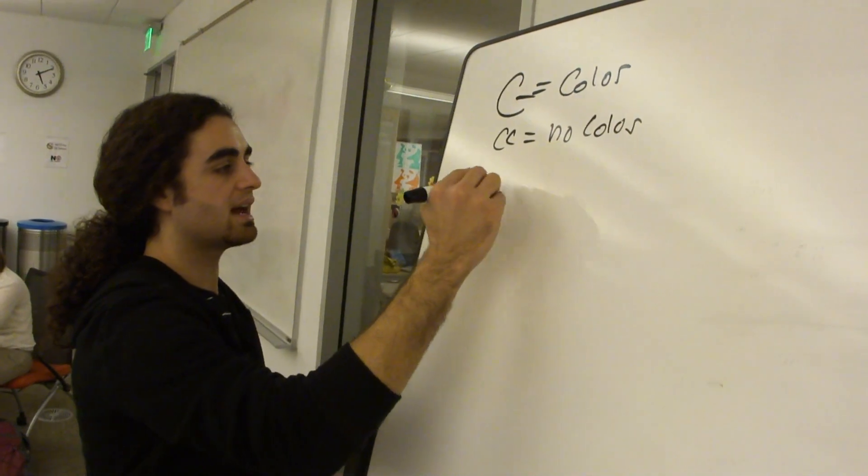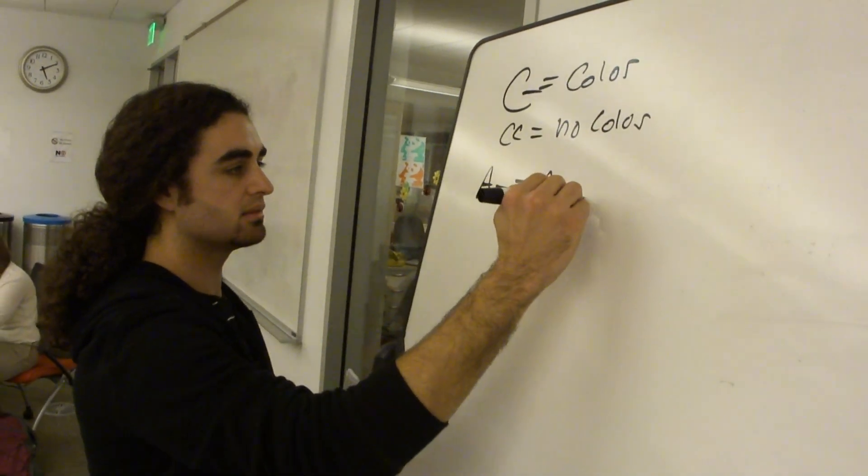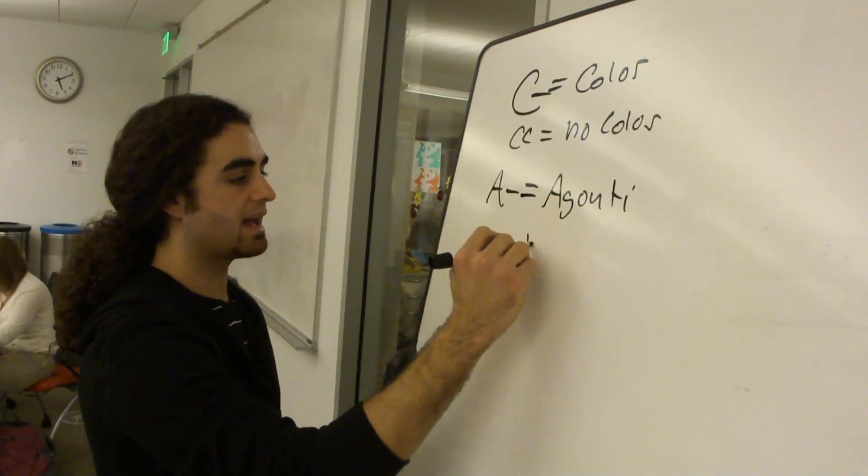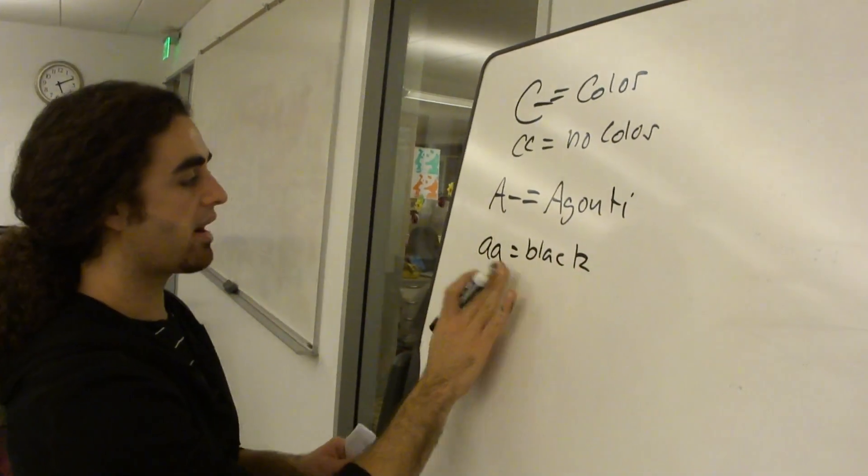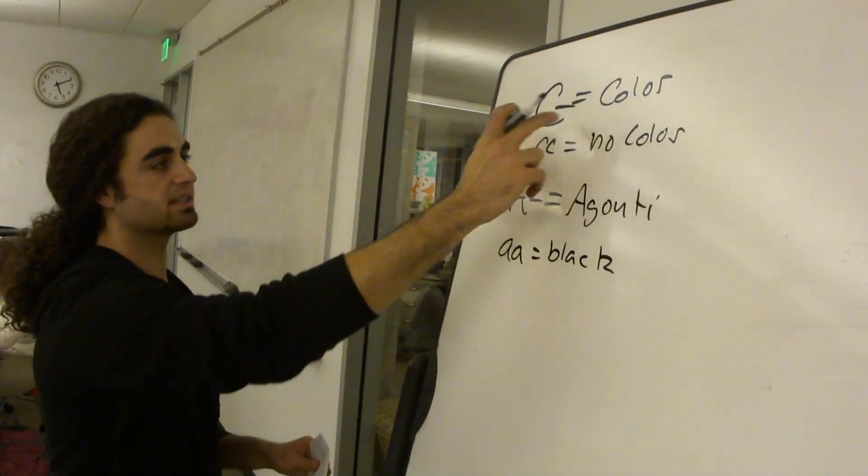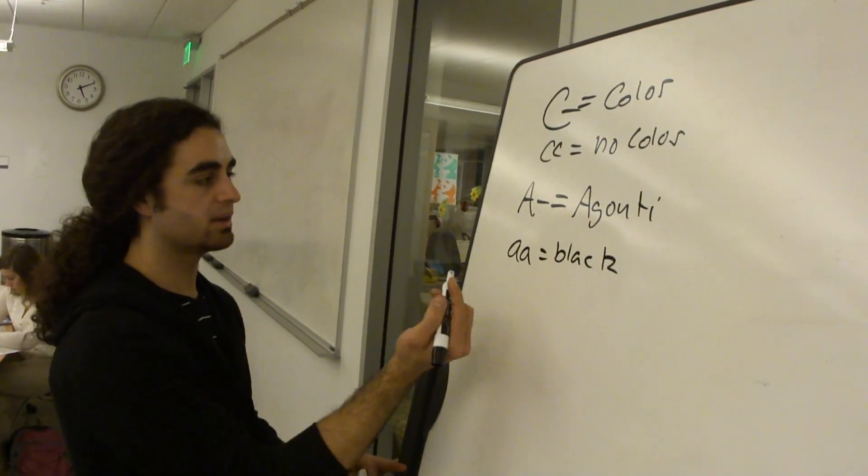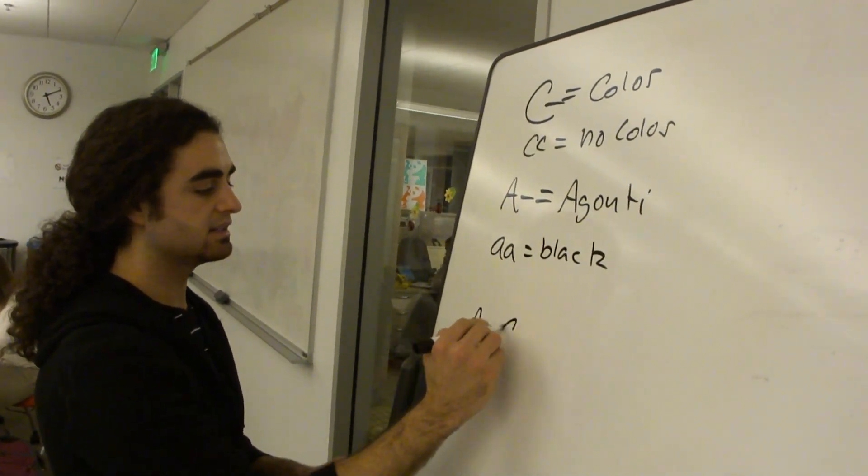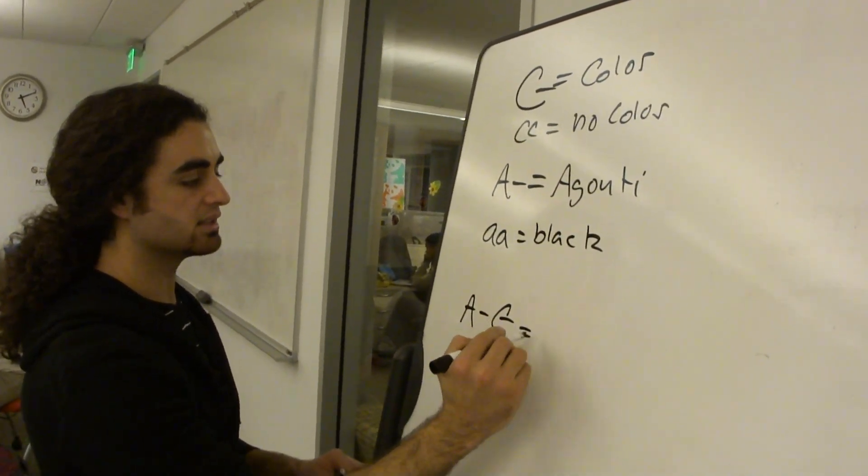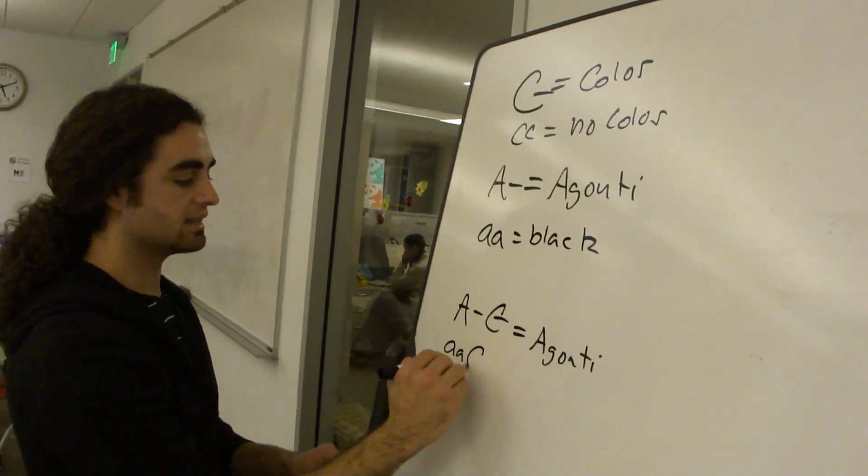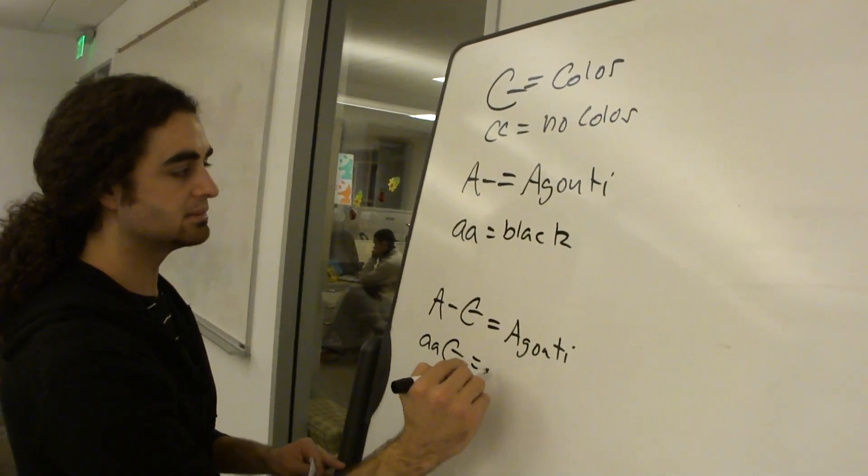So big A dash, it told us was agouti. And little a, little a is black.